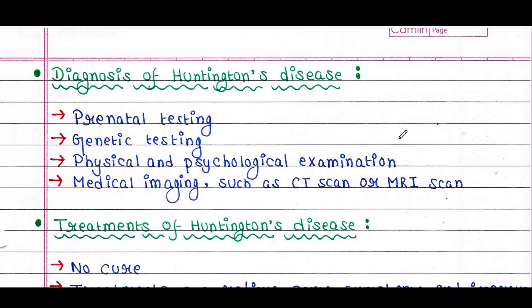Let's see some diagnosis methods for Huntington's disease. Prenatal testing — amniocentesis can be performed for an embryo to identify the mutation. Genetic testing. Physical and psychological examination. Medical imaging such as CT scan or MRI scan.